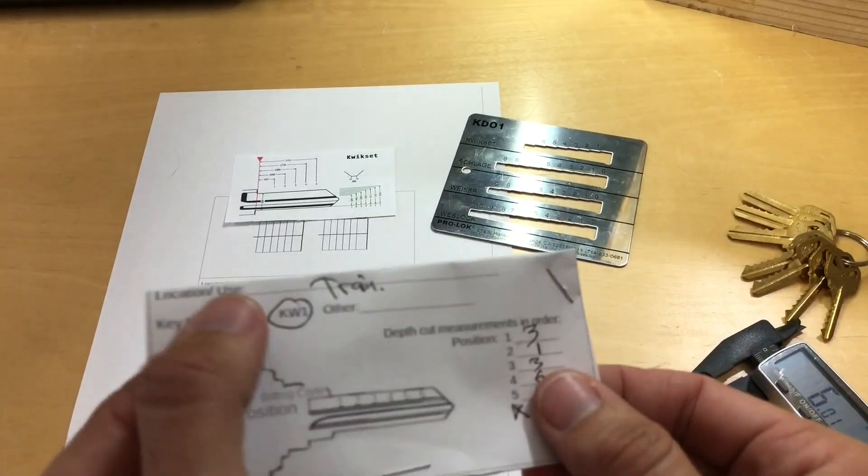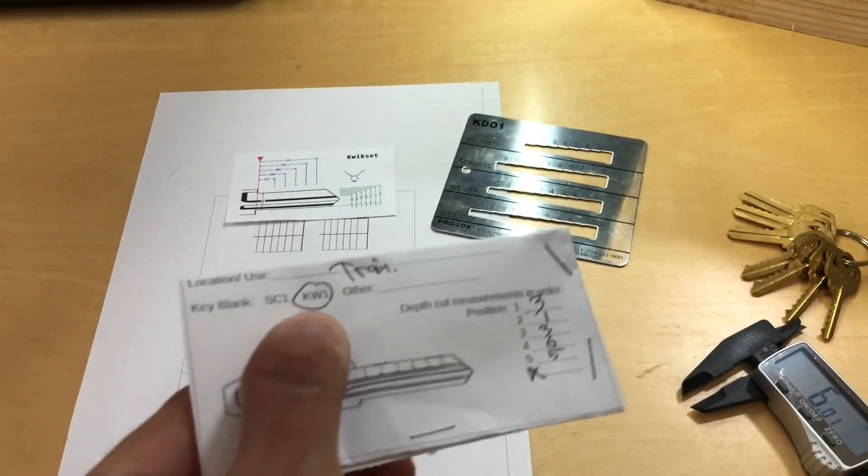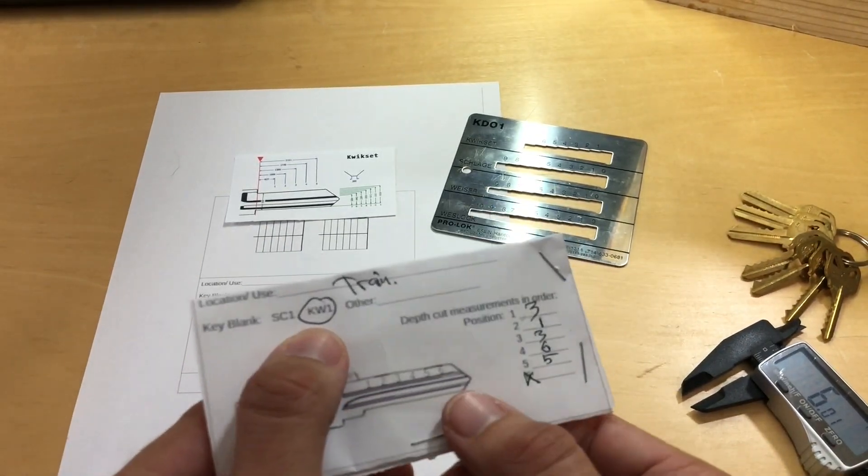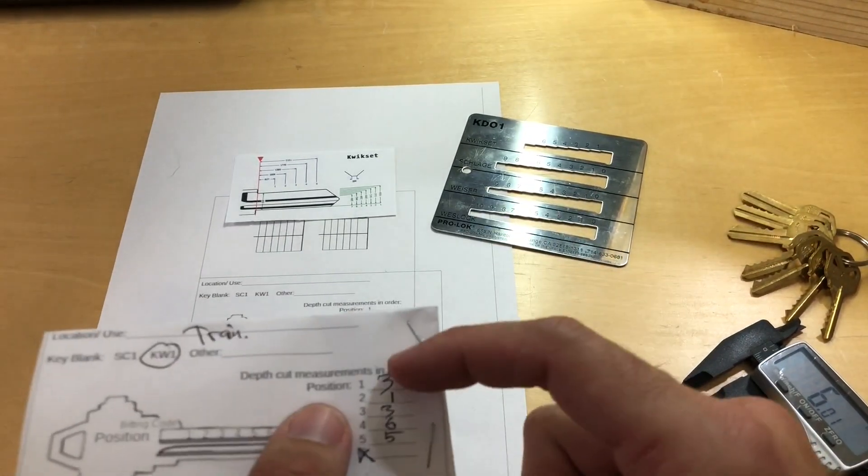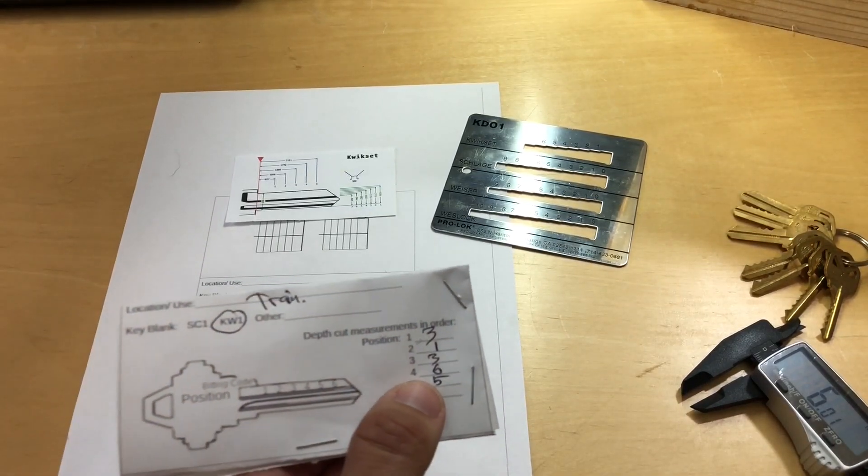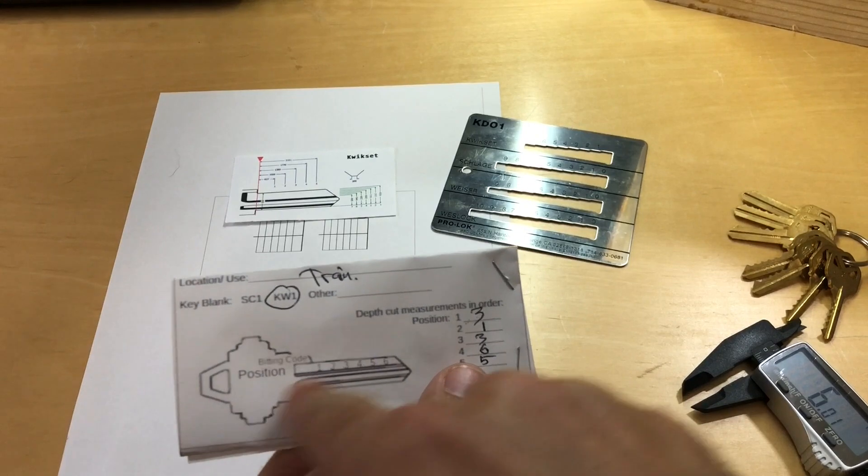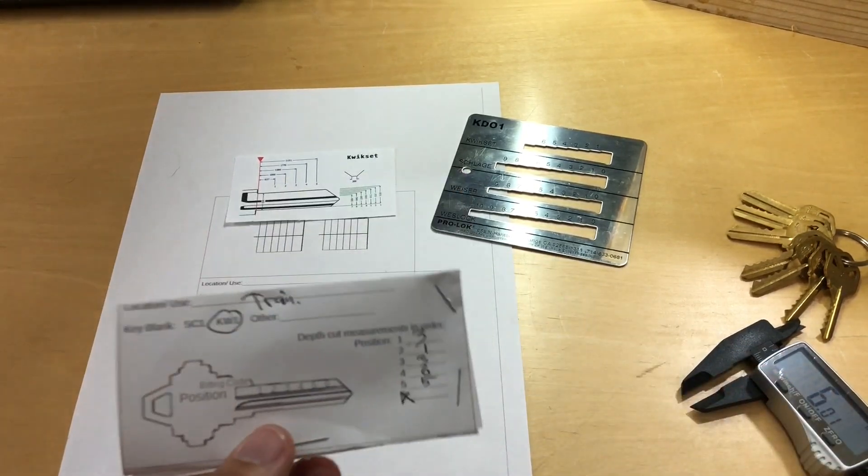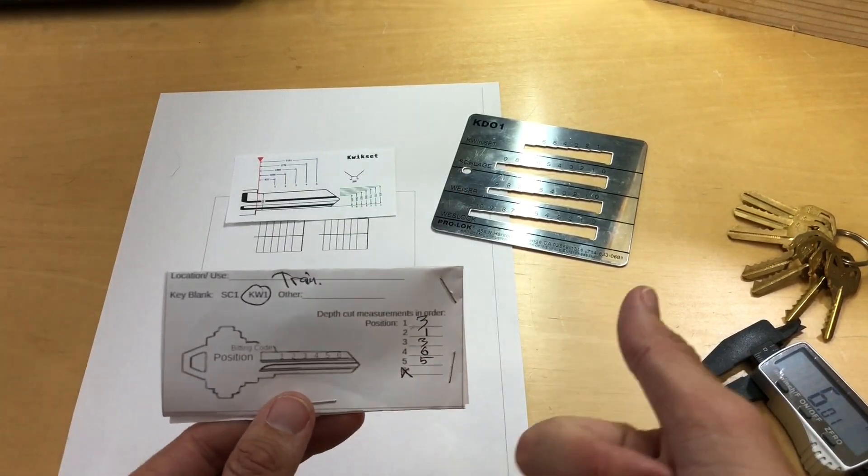So now we have a KW1 blank, a Kwikset 5-pin blank. We have the depth cuts of the key that gives us the profile or the bitting. And we start from left to right or from the bow towards the tip. And now we have all the information we need to either cut our own key or to have someone cut a key for us.